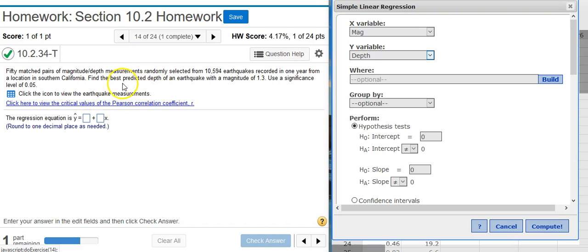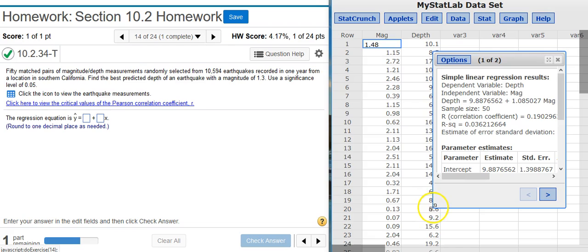The variable for which we find the prediction is always the y because that's what comes out of our regression equation. So we see that we have the right variable selected. Now I just come down here and press Compute, and here I get my results window.